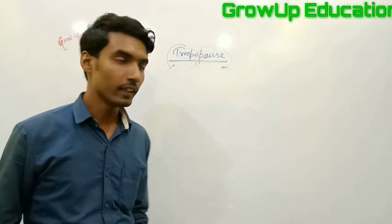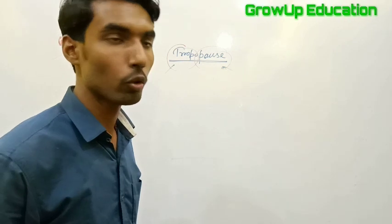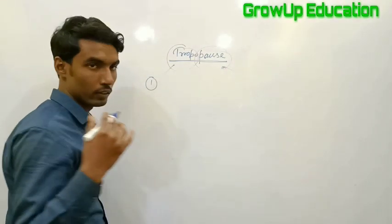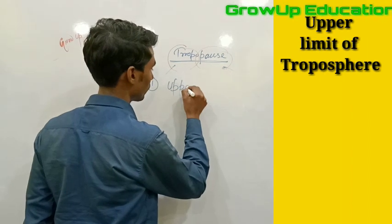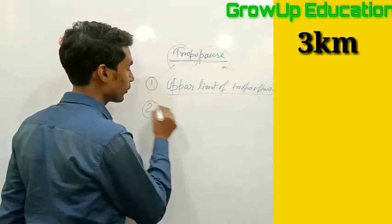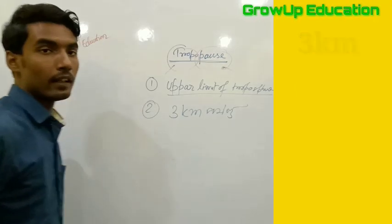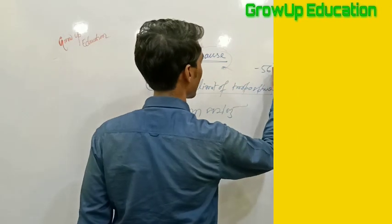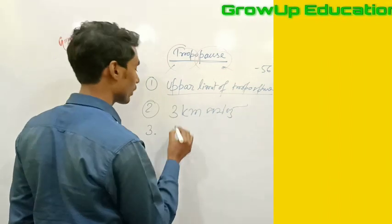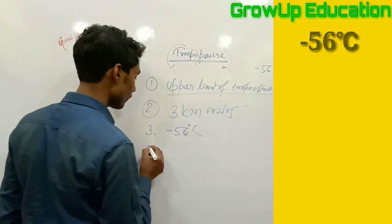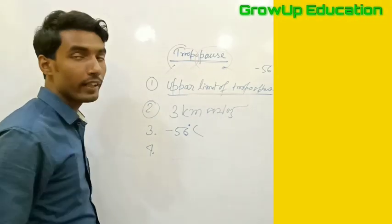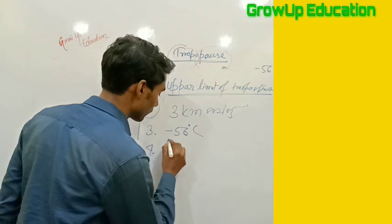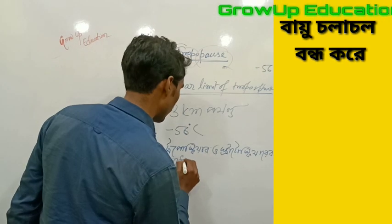If you have to answer a question, you can easily answer it. We will put the upper limit of the troposphere: this is where the troposphere is at minus 56 degrees Celsius. The tropopause is the boundary between the stratosphere and the troposphere. We can see this at the top.